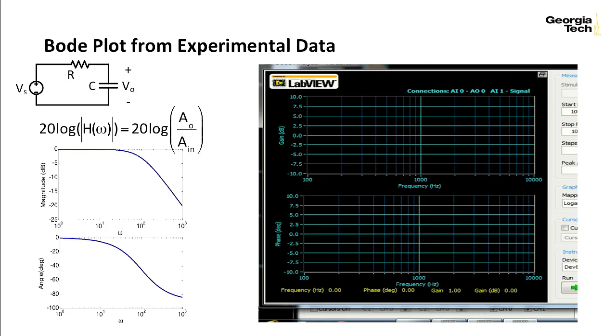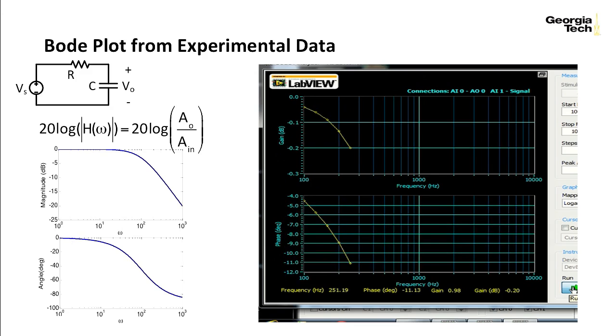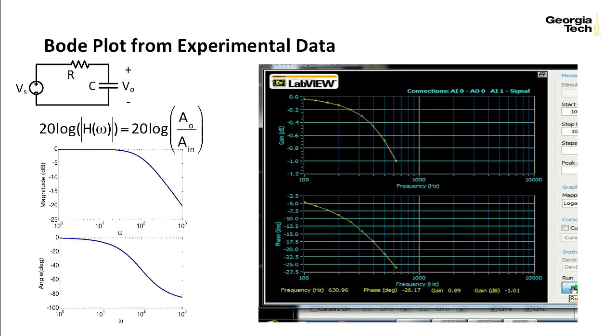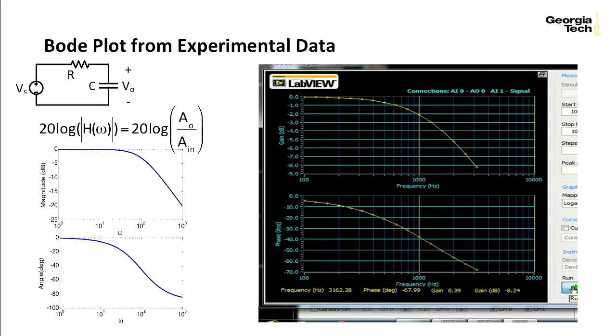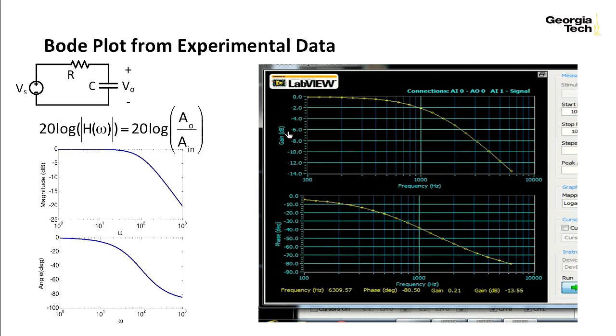Let me show you an example of running a Bode plot instrument. So here's with this same circuit hooked up. And I'm going to hit run on this. And you'll see it building it up. For each of those points, it's finding the amplitude ratio and taking 20 times the log of it and plotting it.